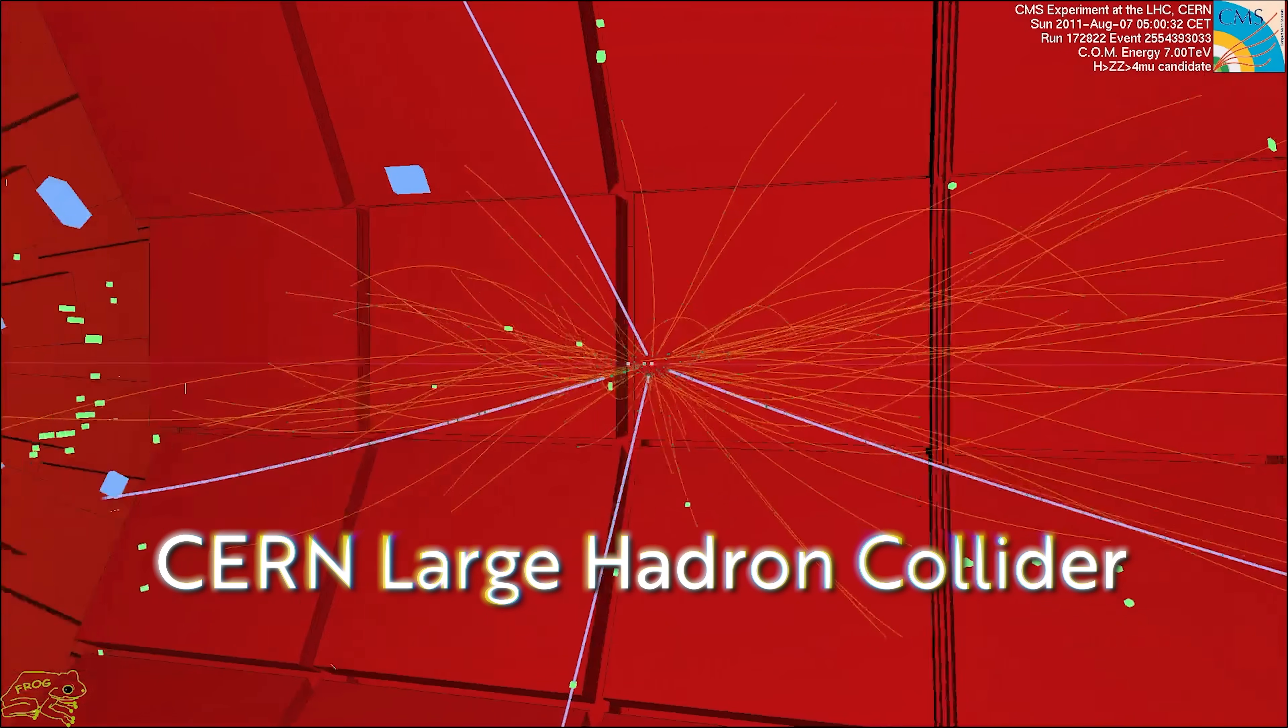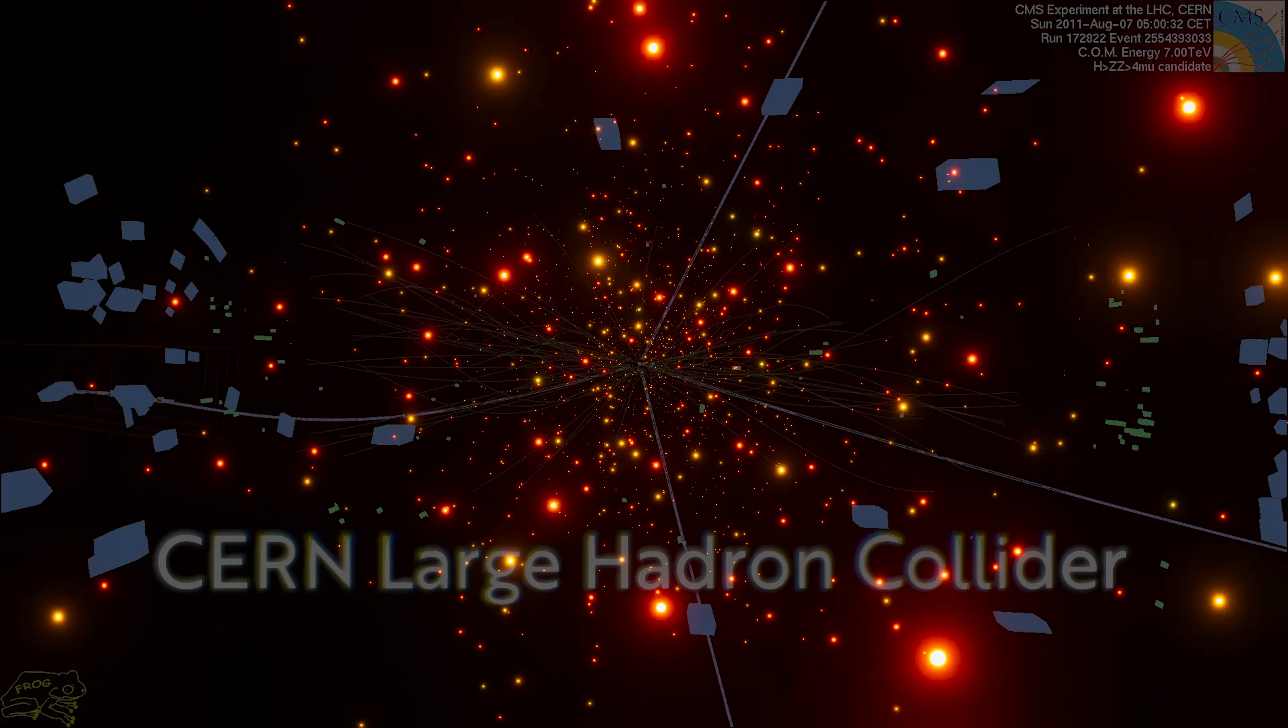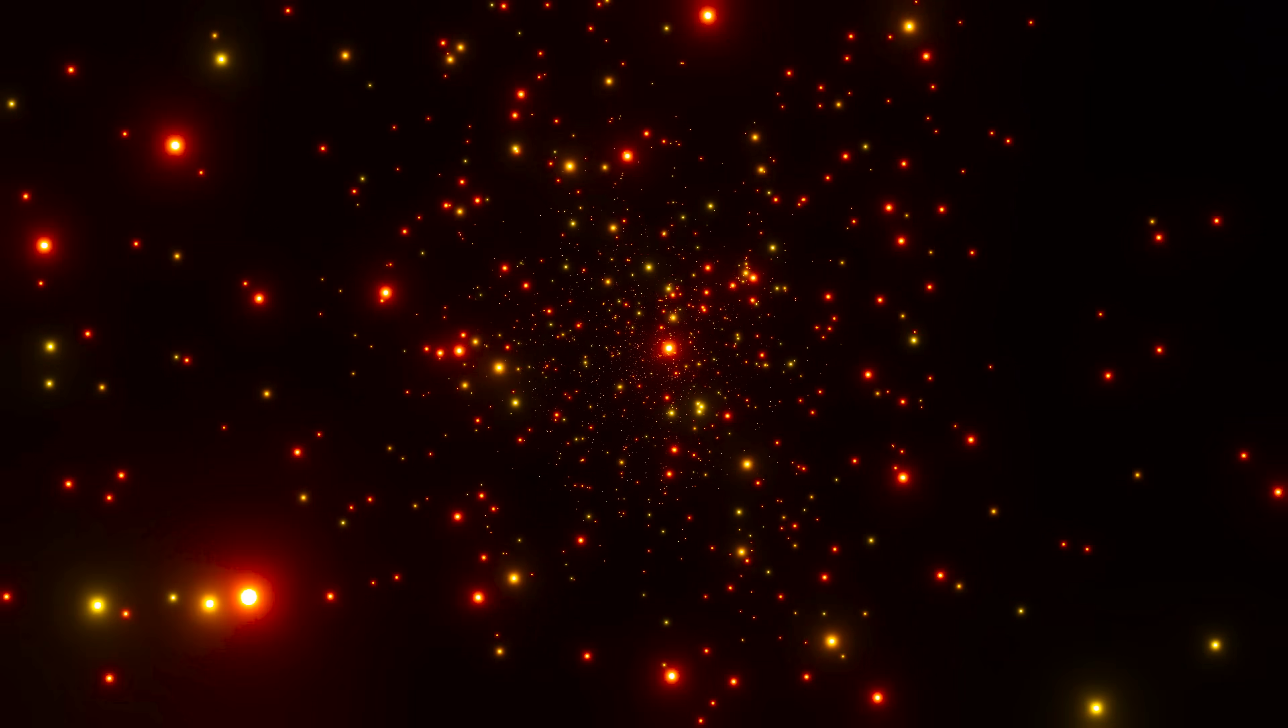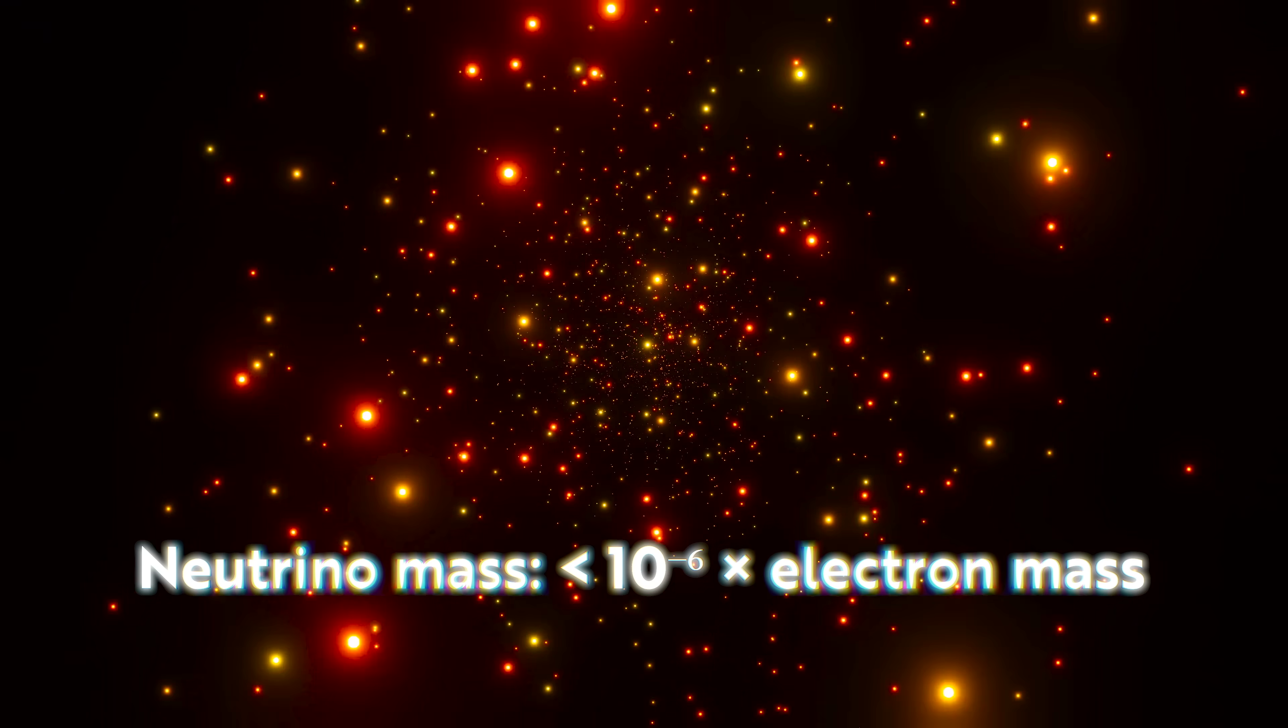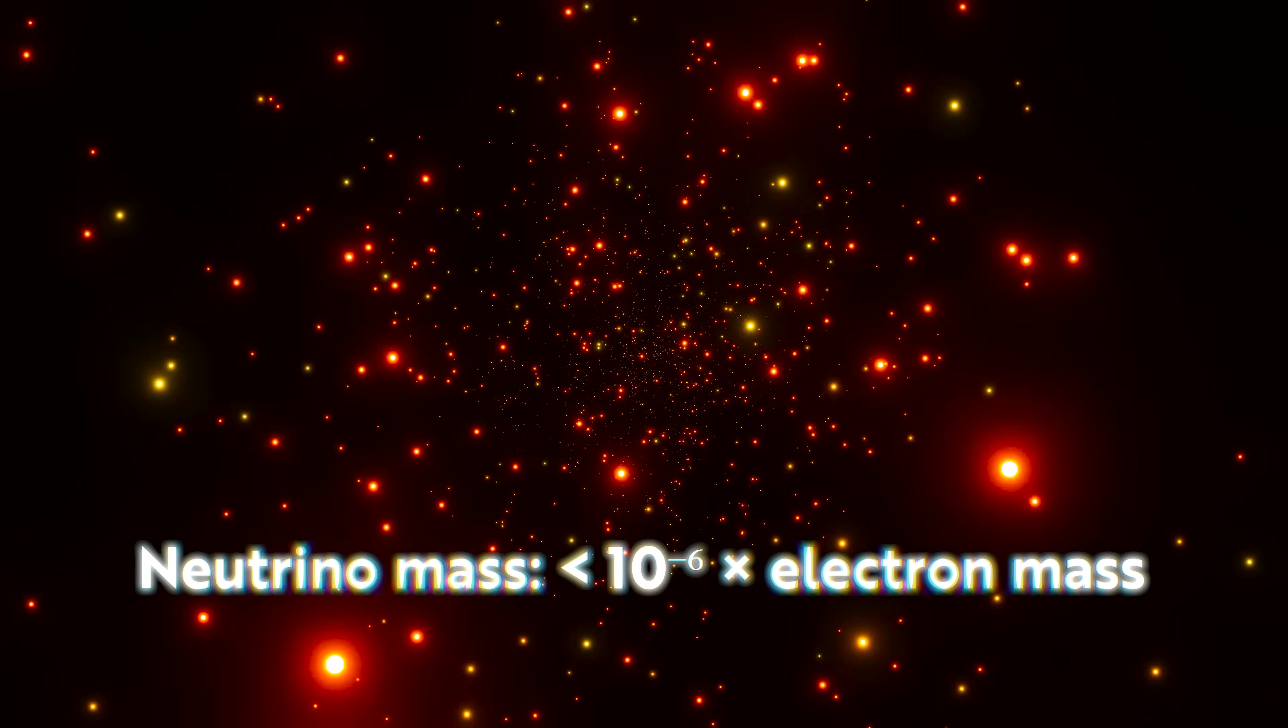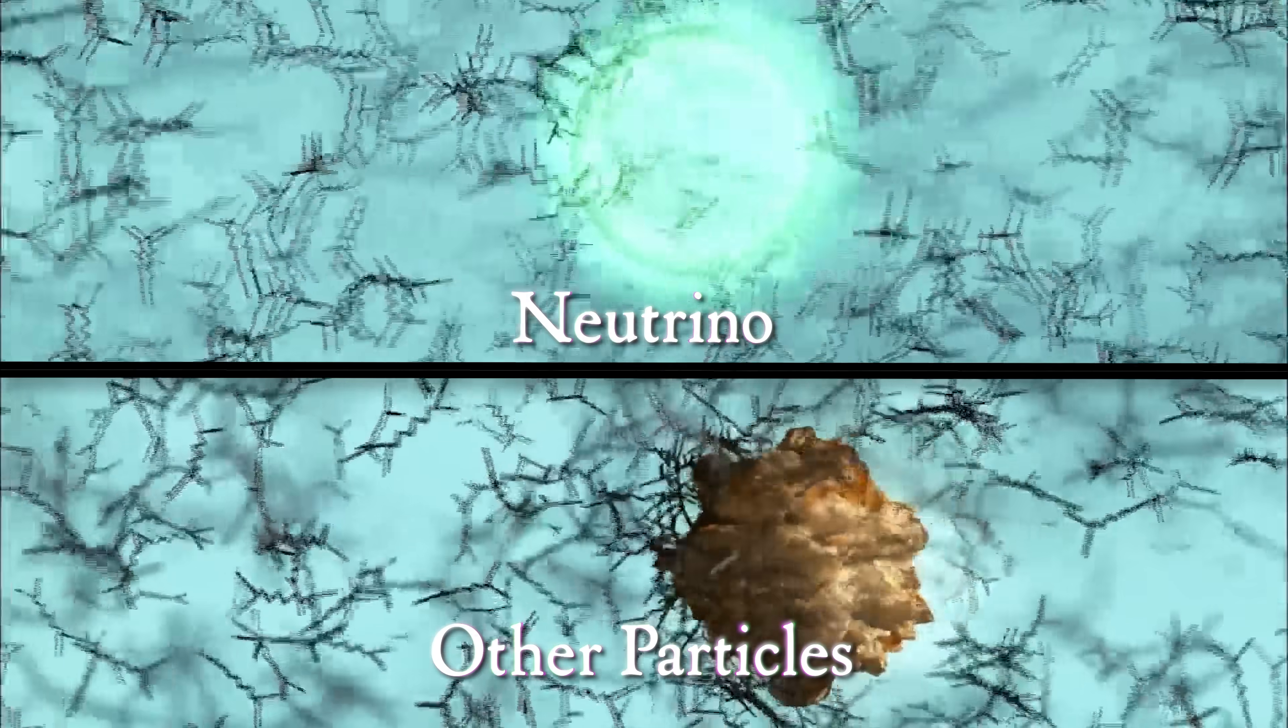But neutrinos are still just as mysterious as they were decades ago. As it comes to their interaction, the mass that they acquire is so tiny, it's less than one millionth of the mass of the next lightest particle, the electron. But if they do interact with the Higgs field, it would be at an incredibly, unprecedentedly weak reaction, since their mass is so minimal. So why don't these little vespers follow the standard rules of mass acquisition?